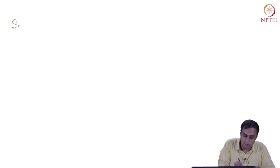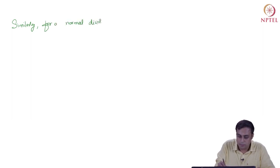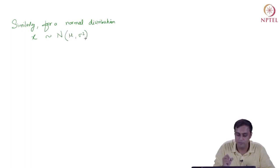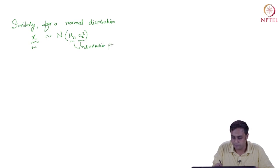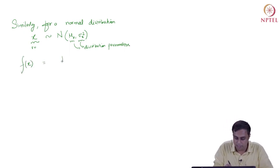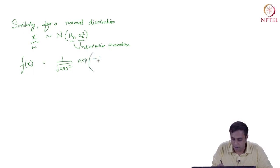Similarly, for a normal distribution: a random variable x is distributed normally with mean μ_x and variance σ²_x — these are the distribution parameters. The density function f(x) for a normal distribution is: (1/√(2πσ²)) · exp(−(1/2)(x − μ)²/σ²_x).